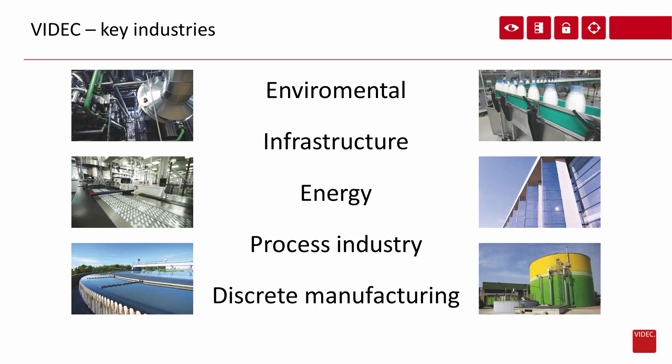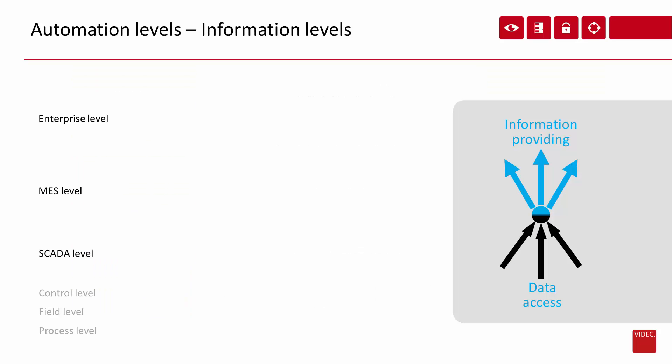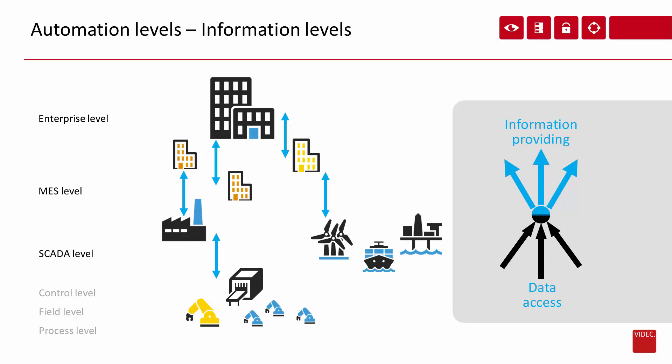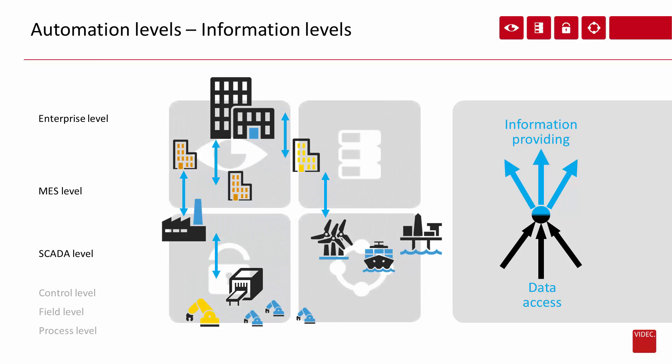We have quite a lot of projects running in the process industry, like validated pharma applications, food and beverage projects and huge installations in the chemical industry. The discrete manufacturing area rounds up our market approach. If we take a look at the automation and information levels, we can see that customers can use our products at every level, starting at the bottom of control and PLC level. There we access the data; in the middle area we aggregate and concentrate the data and turn it into information, which we provide to the whole enterprise level.